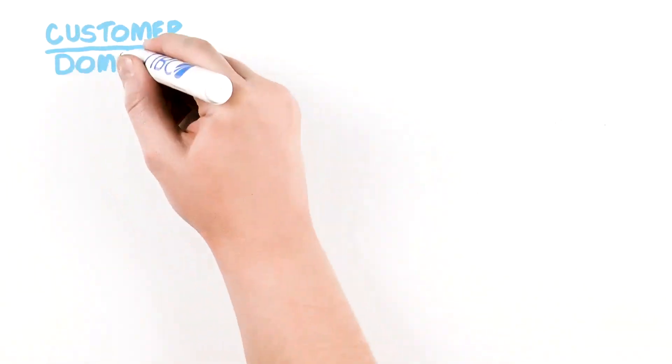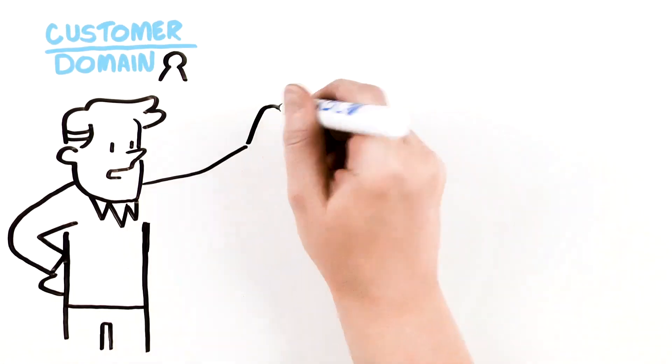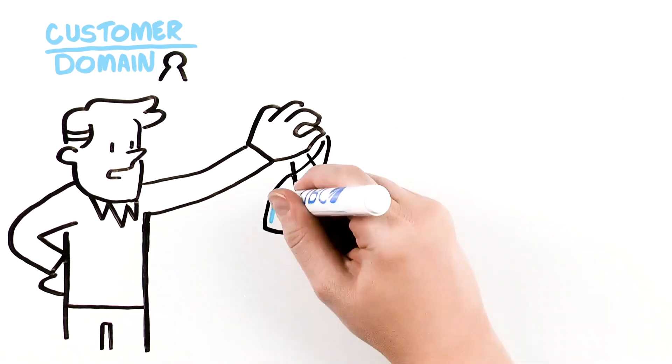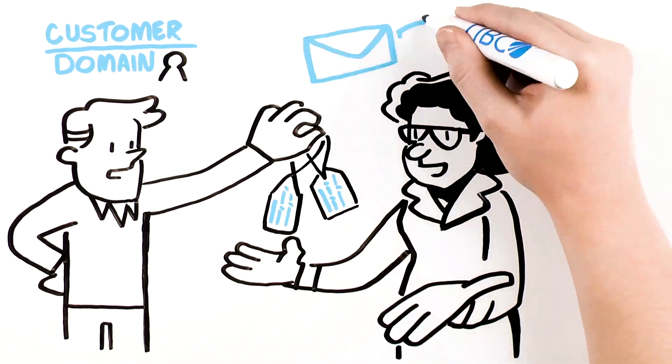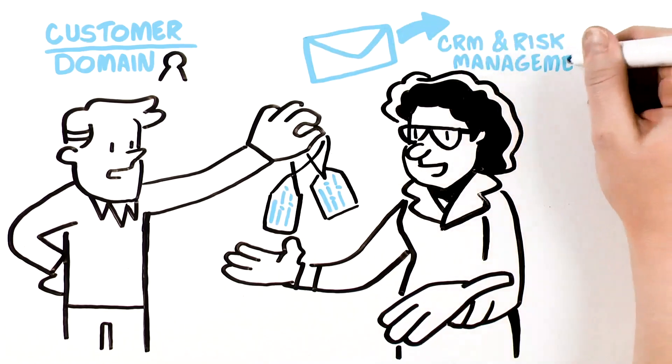Then looking at the customer category, enterprise sales teams can share identifiers and attributes about customers with the finance department. That information is then pushed out to the CRM and risk management systems.